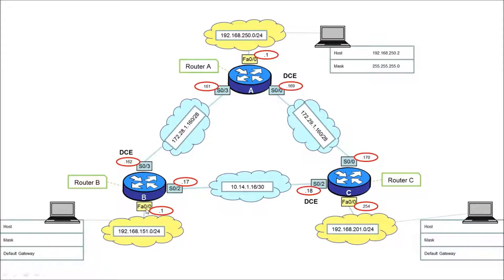I'm using fast Ethernet port 0/0 in each case, though 0/1 could also be used. Router B's subnet is 192.168.151.0/24 using the first usable IP address. Router C uses fast Ethernet 0/0 with subnet 192.168.201.0/24 using the highest usable address, .254. For the serial interfaces, from router A serial 0/0 goes down to router C — any available port with the correct cable and configuration will work.